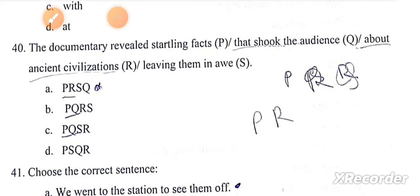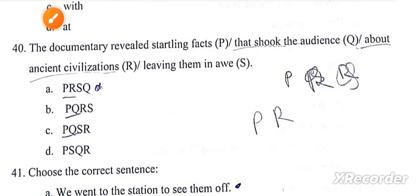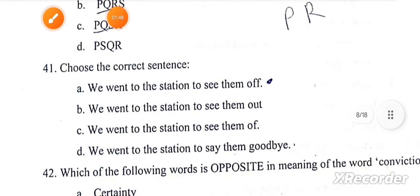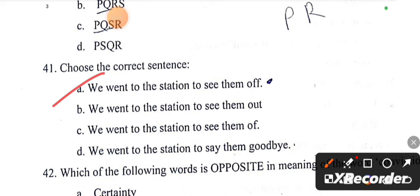The correct answer is A. Choose the correct sentence. The correct answer is A. We went to the station to see them off.